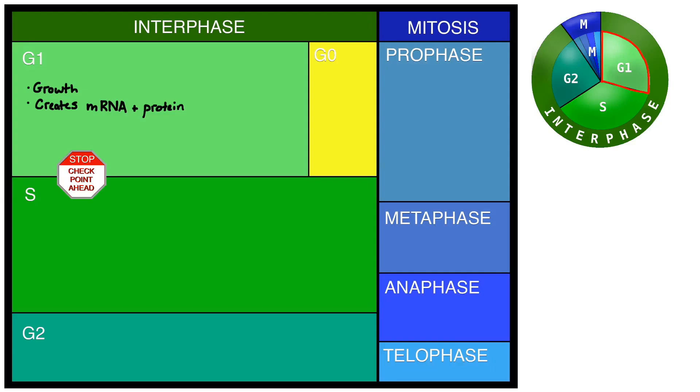The cell checks to make sure that all of the procedures have been completed correctly. If they have, the cell will move on to the S phase. If the cell detects insufficient growth or errors in the genetic material, it will likely enter what's called the G0 phase instead.